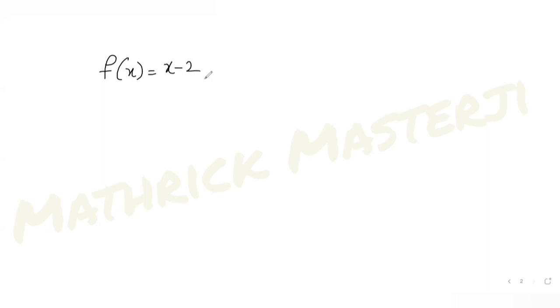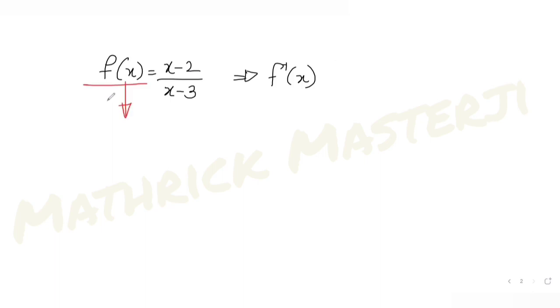So f(x) is (x minus 2) over (x minus 3). To find the inverse of this function, I put f(x) equal to a variable y, so y equals (x minus 2) divided by (x minus 3). Now I'll try to express x in terms of y.